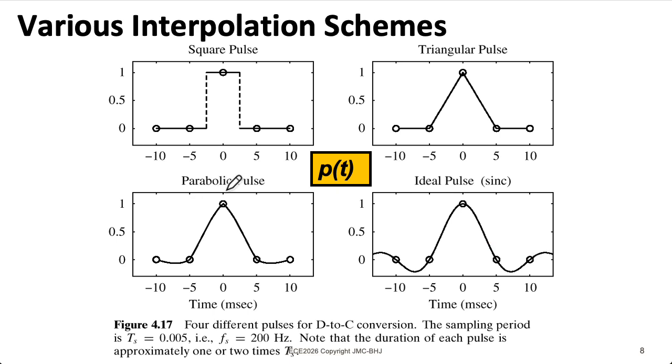You can think of this parabolic pulse in the lower left corner that's running from minus 2Ts to 2Ts as being an attempt to approximate this sinc function that's better than the triangle pulse, but is still practical.